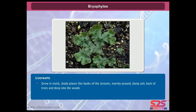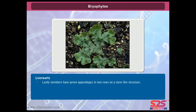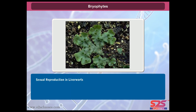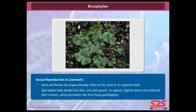Liverworts grow in moist, shady places like banks of streams, marshy ground, damp soil, bark of trees, and deep in the woods. They have a dorsoventrally flattened thaloid body pressed to the substrate, and leafy members have green appendages in two rows on a stem-like structure. Asexual reproduction occurs by fragmentation but also by gemmae, which are green multicellular buds developing in cup-like structures. These gemmae on detachment grow into new individuals. In sexual reproduction, male and female sex organs develop on the same or separate thalli. The sporophyte body is divided into foot, seta, and capsule, where haploid spores are produced after meiosis and germinate into free-living gametophytes.